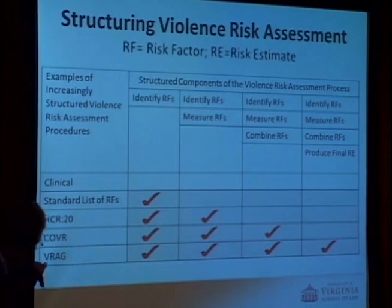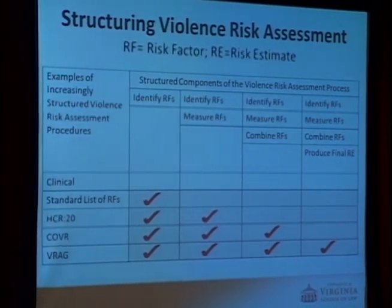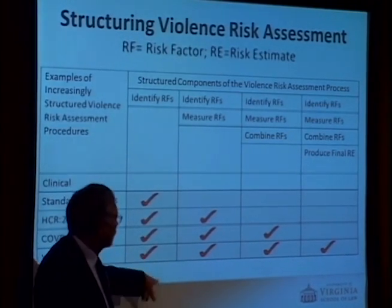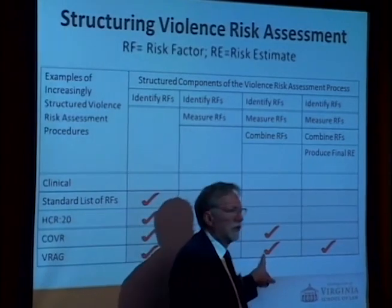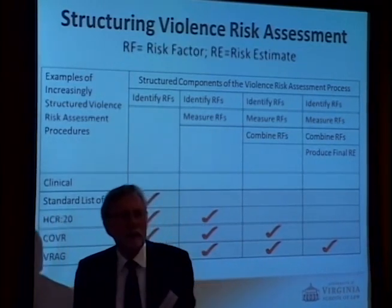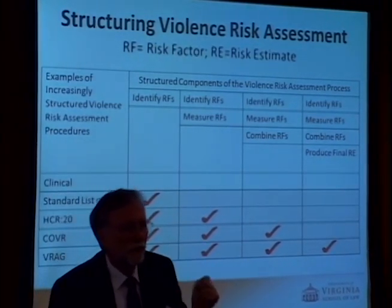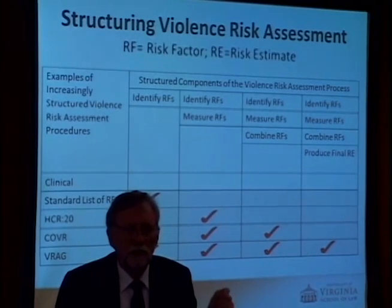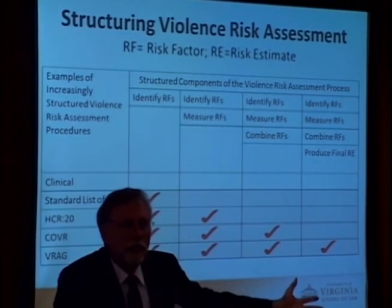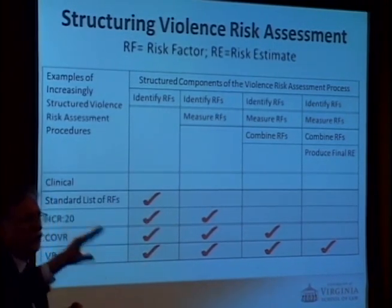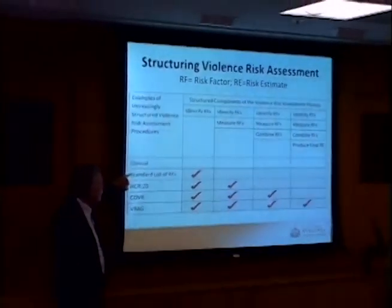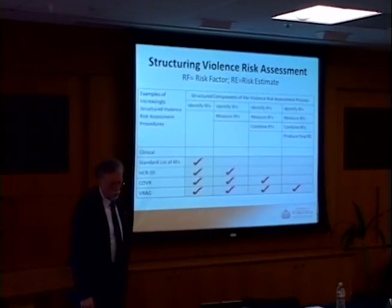Finally, the Violence Risk Appraisal Guide, used in many insanity cases, is a purely statistical instrument. It asks about 12 risk factors, tells you how to measure and combine them, and once combined, you do not tweak it — because if you adjust it clinically, you are more likely to reduce its accuracy than increase it. For every time you improve accuracy, there may be two times you make it less accurate. That is the array of current approaches, from no structured components through all four.